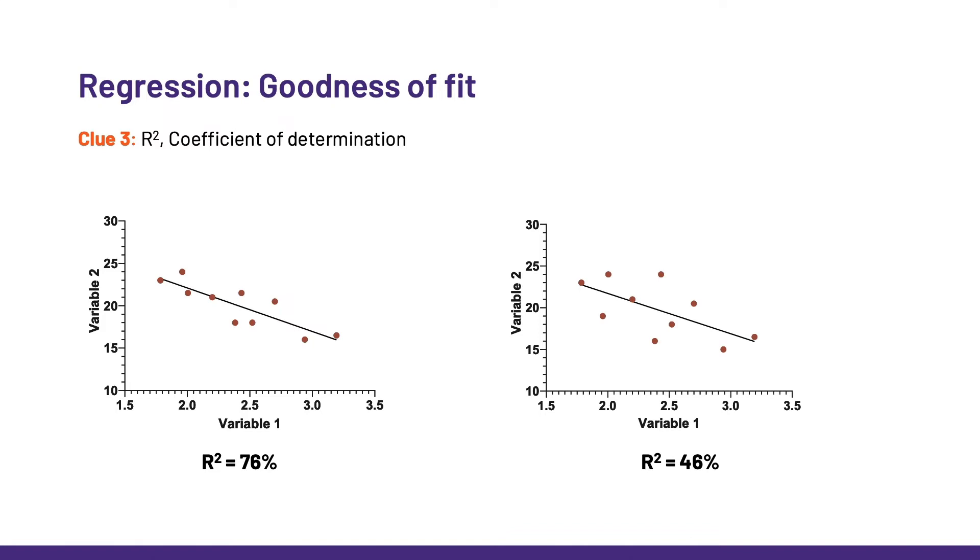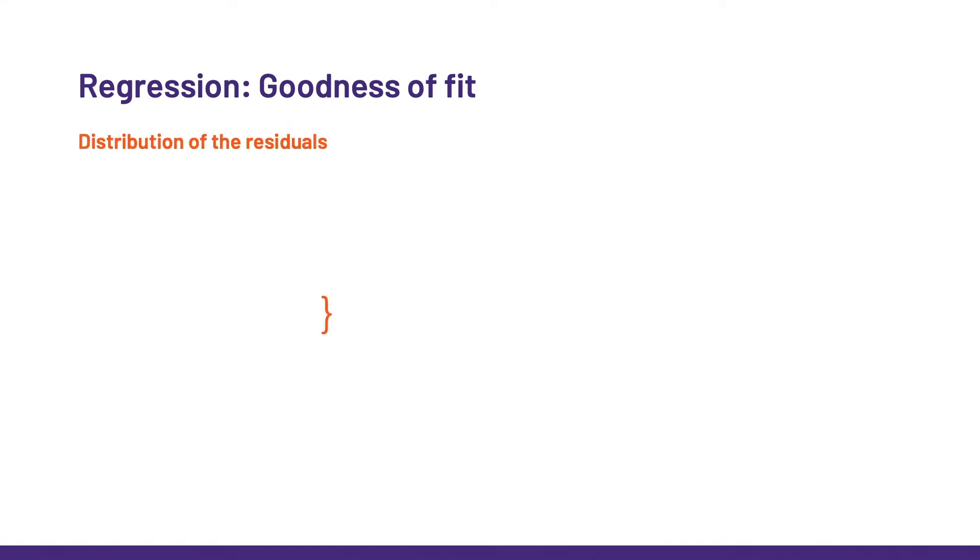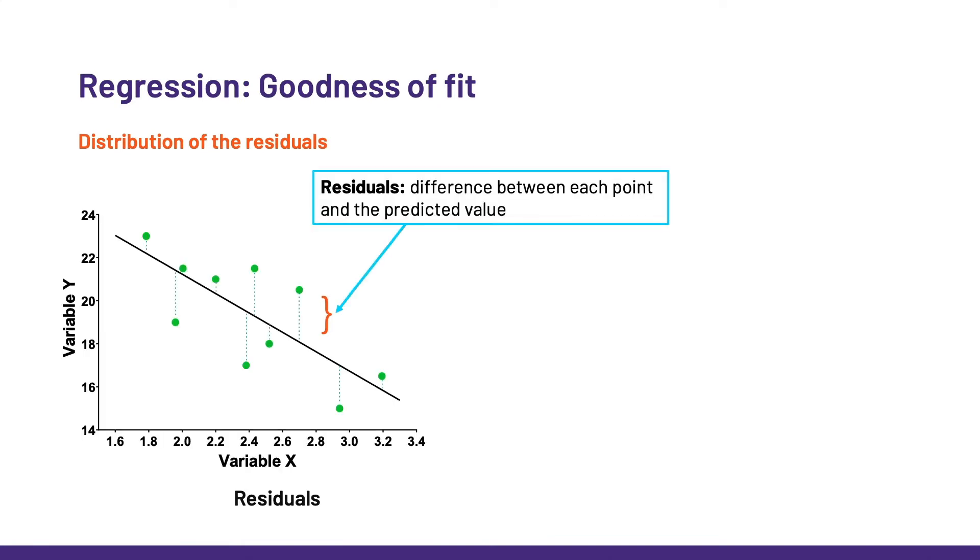For the last two clues, we have to look at residuals. Let's see what they are first. Like often in stats, a parameter says what it is. The residuals are what is left when we have summarized data. So, for instance, here the residuals are the differences, positive and negative, between the actual values and the line of best fit, which is supposed to summarize their behavior.